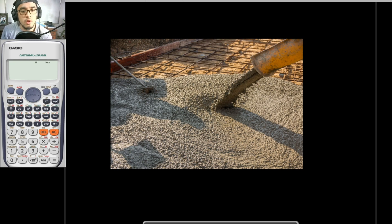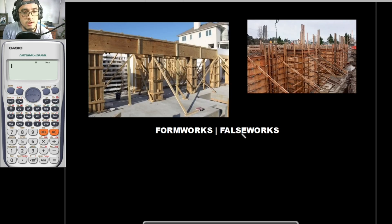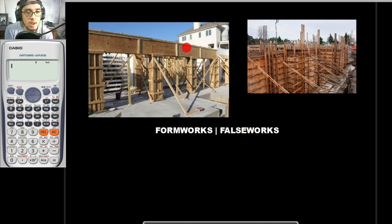We want to have a concrete structure with a definite shape. Since fresh concrete does not have any definite shape, we are to pour it into a mold with our desired definite shape. In construction, that mold is what we would be calling formworks — the temporary mold wherein we pour our concrete to give it the desired shape.